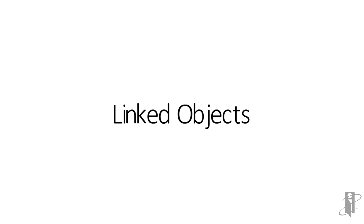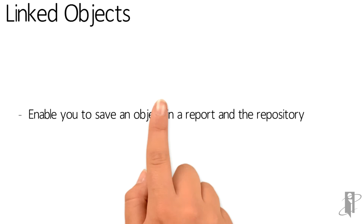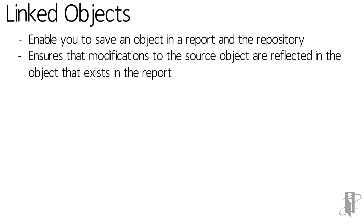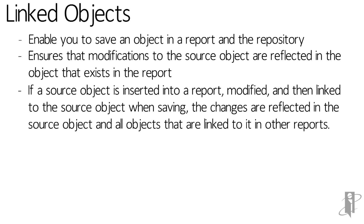Linking objects reduces report development time and effort and maintains consistency of objects between reports. By updating one source object, you update all reports that are linked to this source object. Linked objects enable you to save an object in a report and the repository. Linking the object in the report to the source object in the repository ensures that modifications to the source object are reflected in the object that exists in the report.